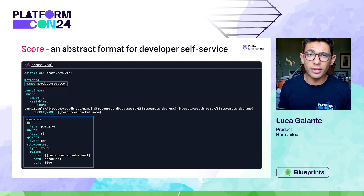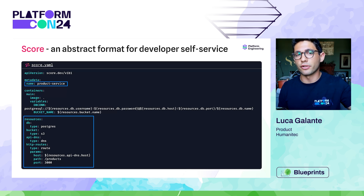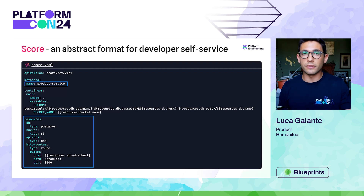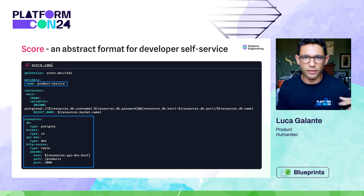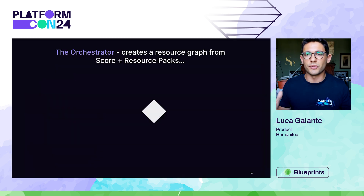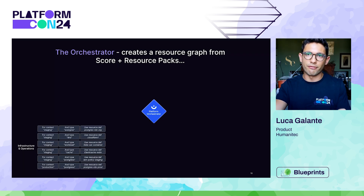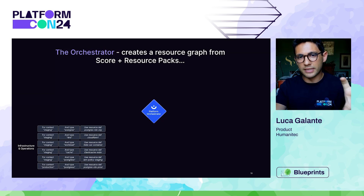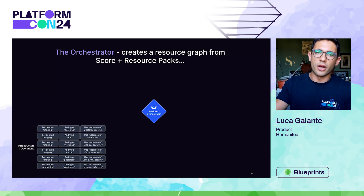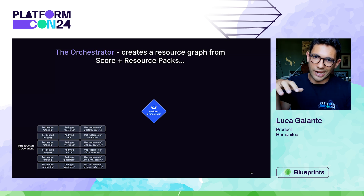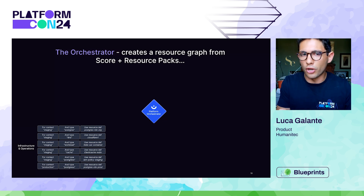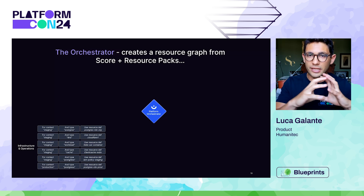Developers like Score because it's just a YAML file and they're used to that — they don't need to log into some UI and click around. As a developer, all you say is: I have a service called product-service and I describe in a very abstracted way what that service needs — a database of type Postgres, a bucket of type S3, and so on. Crucially, you don't need to specify any implementation details like Postgres v14.3. You just say you need a Postgres, and you're done.